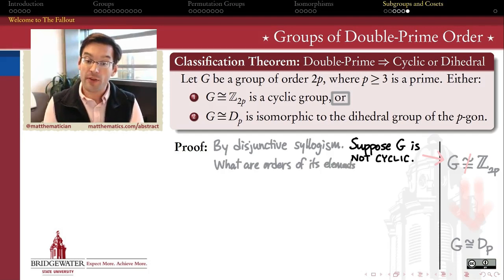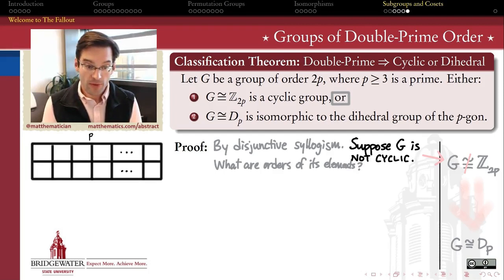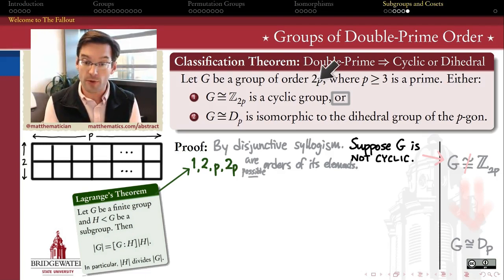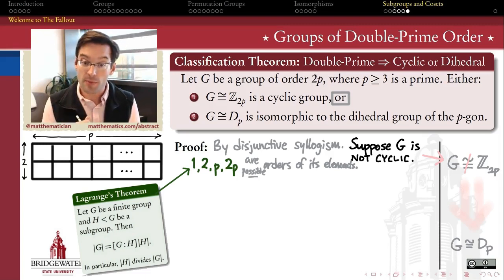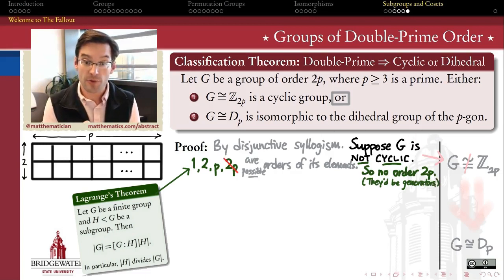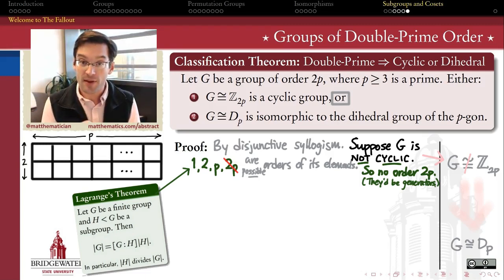We begin by assuming that G is not cyclic, and asking what the orders of elements in G can be. Lagrange's theorem says that orders of elements must be divisors of the order of the group. The only divisors of 2P are divisors of 2 or divisors of P, because 2 and P are relatively prime. So the only possible orders are 1, 2, P, and 2P. Because G is not cyclic, we can rule out any element of order 2P — if we had one, it would generate all elements and make the group cyclic.